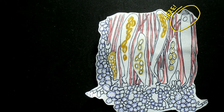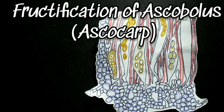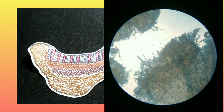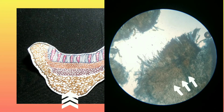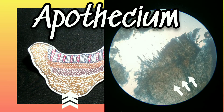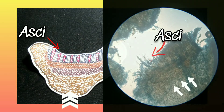The definite structure thus developed is called fructification, also known as ascocarp. In Ascobulus, the formation of asci and ascospores takes place when some vegetative hyphae grow upwardly surrounding the sex organs and form a compact, fleshy, cup-shaped fruiting body known as apothecium. Asci are projected well beyond the level of the hymenium of the apothecium.